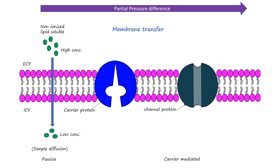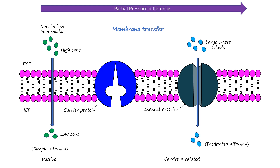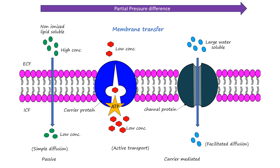Carrier-mediated transport involves proteins in the membrane that help drugs cross. There are two main types: facilitated diffusion and active transport. In facilitated diffusion, the drug binds to a carrier protein which helps it cross the membrane. Like passive diffusion, this process does not require energy and moves the drug from high to low concentration. It is used by water-soluble, polar drugs that are too large to pass directly through the lipid bilayer. In contrast, active transport requires energy — usually from ATP — because the proteins move the drug against the concentration gradient. This is how certain drugs that resemble essential nutrients like vitamins and amino acids are absorbed into cells.